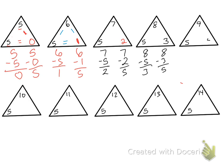5 plus 4 equals 9, so 9 minus 5 equals 4, or 9 minus 4 equals 5. For the next one, 5 plus 5 equals 10, so my subtraction fact is 10 minus 5 equals 5. And I only need to write that once because my numbers down here are the same.